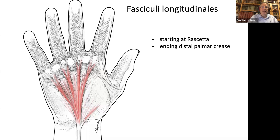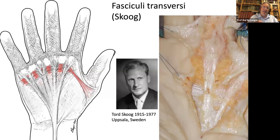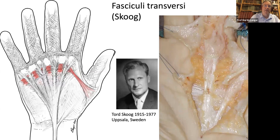The palmar aponeurosis — its longitudinal fibers — starts at the wrist level at the retinaculum area and ends at the area of the distal palmar crease. A little bit below, there are transverse fibers first described by Todd Skoog in 1967 from Uppsala, Sweden. These transverse fibers are very rarely affected by Dupuytren's disease. The radial extent of these fibers will be discussed shortly.